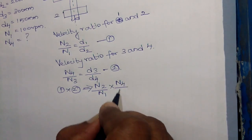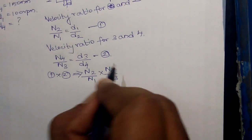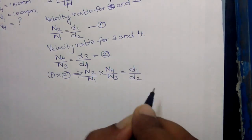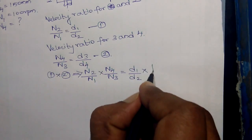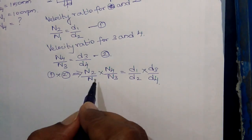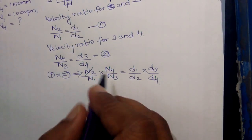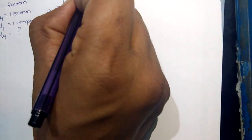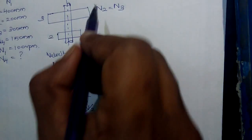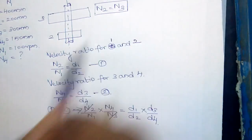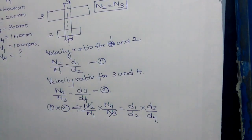Here n2 is equal to n3. Let us give these equation numbers as 1 and 2. As we discussed earlier, speed of pulley n2 and n3 are equal as they are mounted on the same shaft.